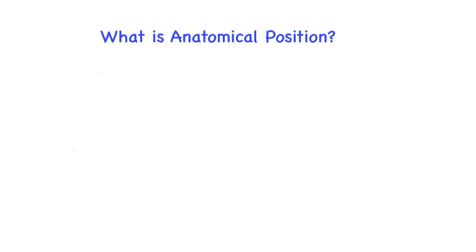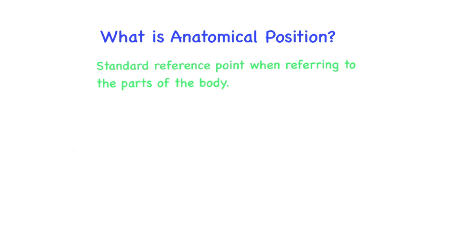Anatomical position involves the individual standing straight, looking forward, feet flat on the floor and shoulder-width apart, with toes pointing forward. The upper limbs are at the sides with the palms facing forward. Whenever we refer to the body or use directional terms, we are referring to the body in anatomical position.